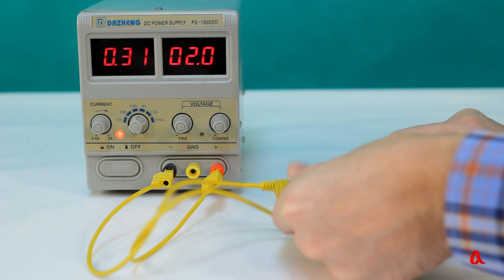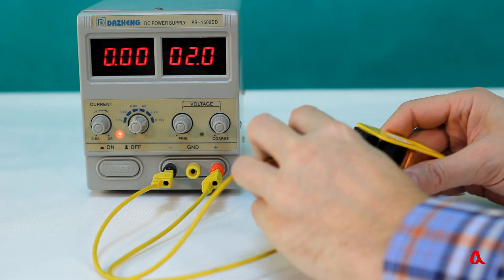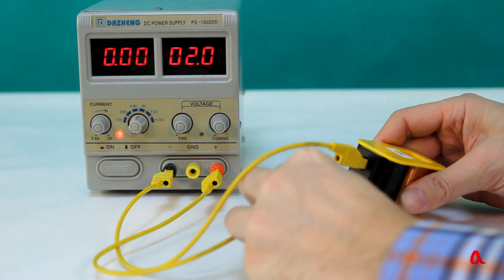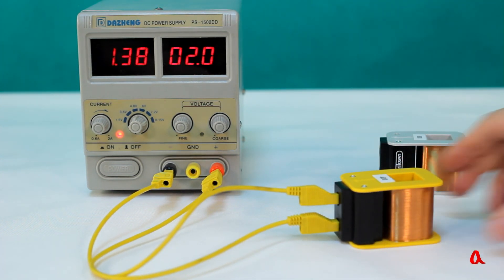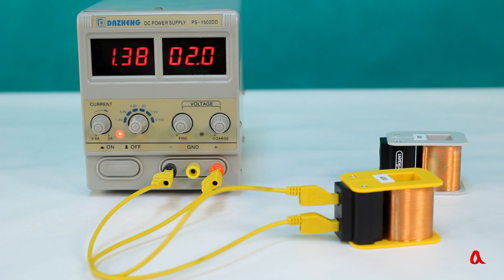Now we will replace this coil with another one with fewer turns and thicker wire. The current of 1.4 ampere flows through this coil at the same voltage, which is 4.5 times greater. So it can be said that this coil has 4.5 times less resistance.